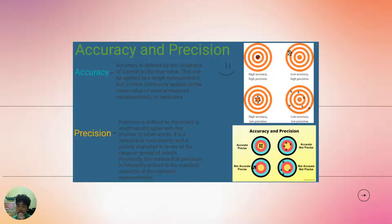Accuracy is defined as the closeness of a result to the true value. This can be applied to a single measurement, but it's more commonly applied to the mean value of several repeated measurements or replicates.